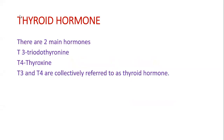Coming to thyroid hormones, there are two main hormones: T3 and T4. T3 is triiodothyronine and T4 is thyroxine. The numbers three and four refer to the number of iodine atoms present in each hormone molecule — three iodine in T3 and four iodine in T4. Collectively, T3 and T4 are called thyroid hormone.